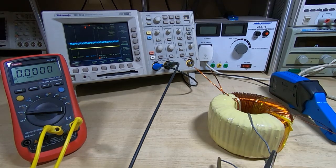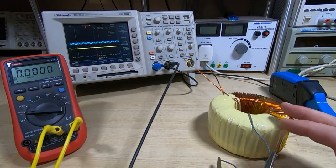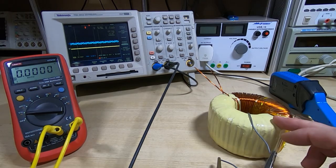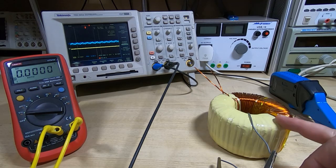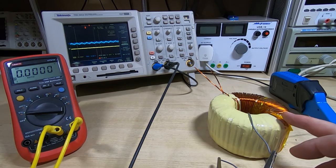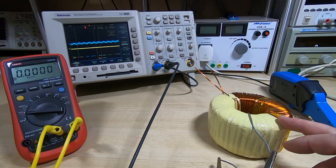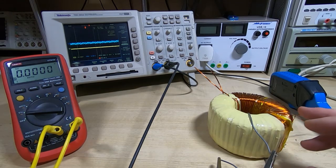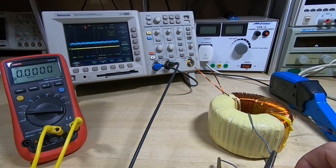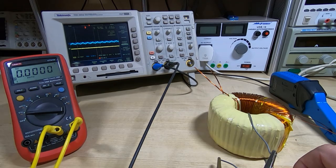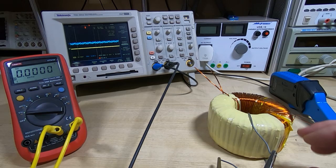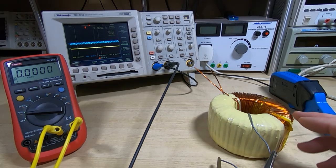If you find yourself with a transformer you know nothing about, the first thing you can look at is the turns ratio, then you can calculate the number of turns on the primary winding. You can then measure the wire thickness and calculate the maximum current that wire will be able to carry.